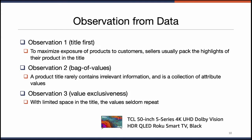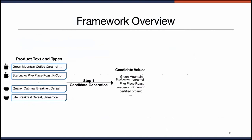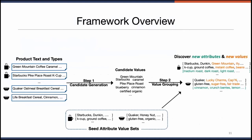These observations motivate the design of our framework, and based on them, we work on product title text only. Here's an overview: there are two steps. In the first step, we take the product text and generate a set of candidate attribute values from the raw text. In the second step, we take those candidate attribute values along with our weak supervision and group them into clusters of attributes. The second step is an iterative process.